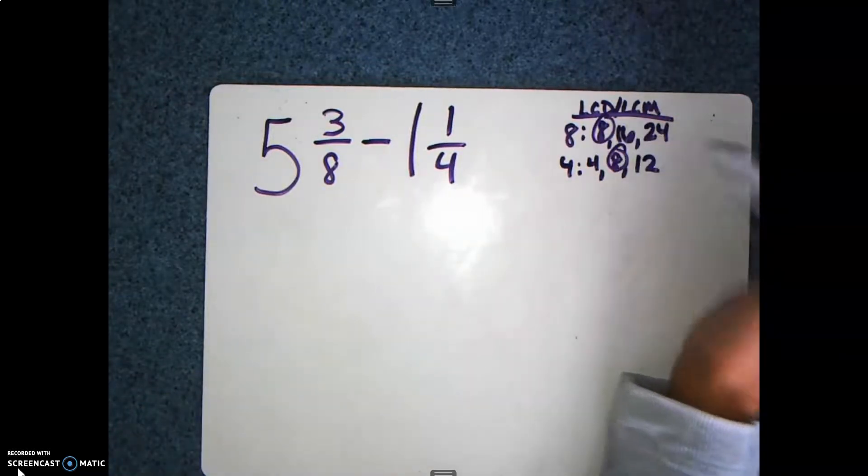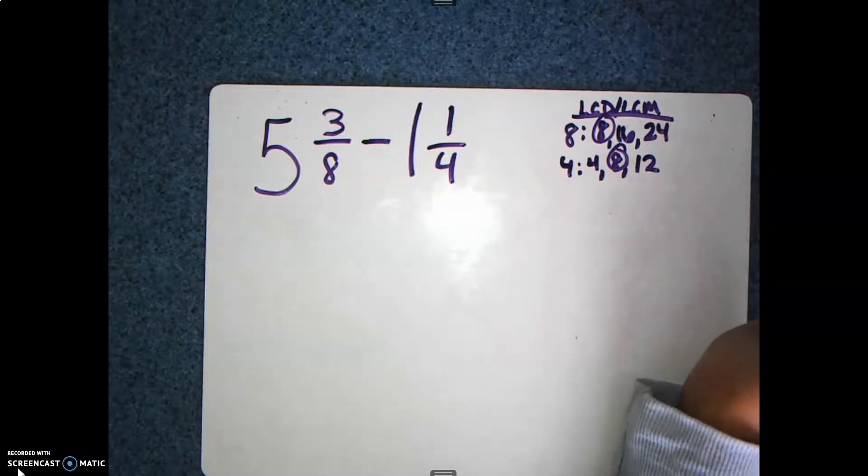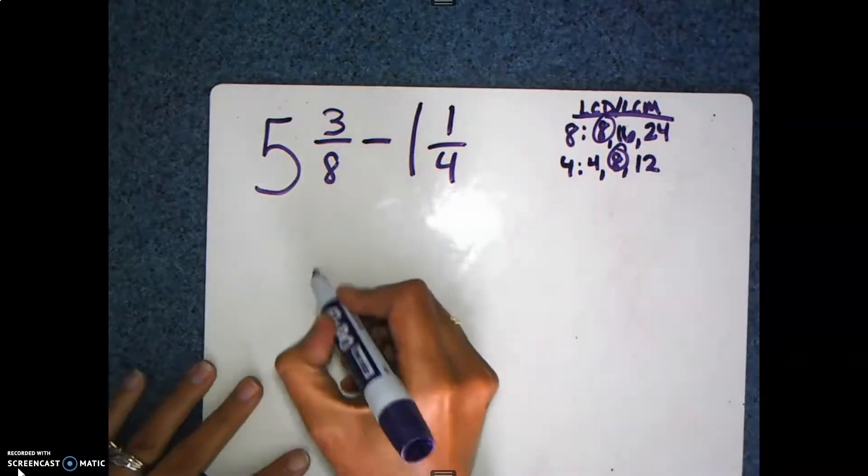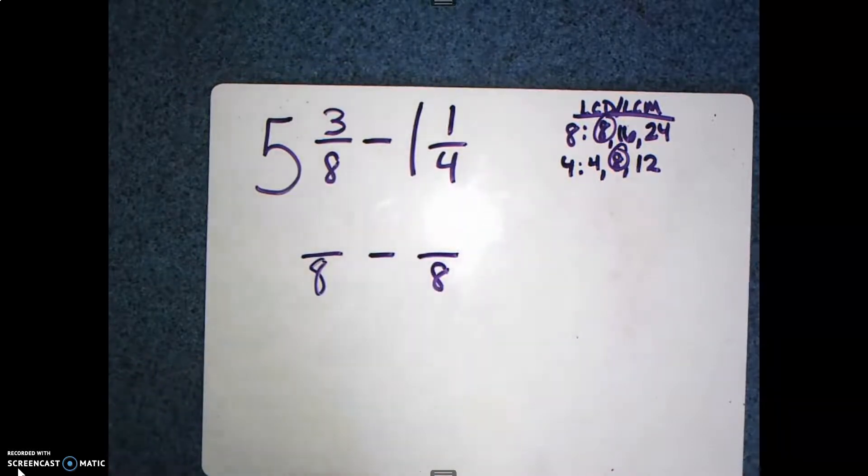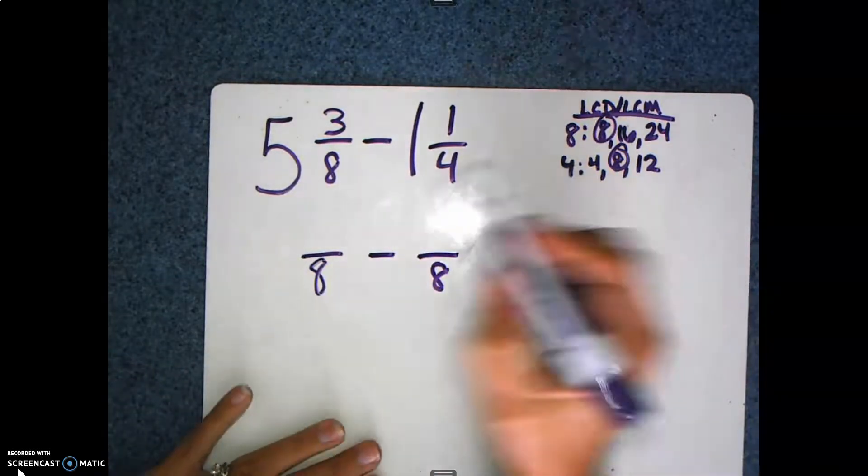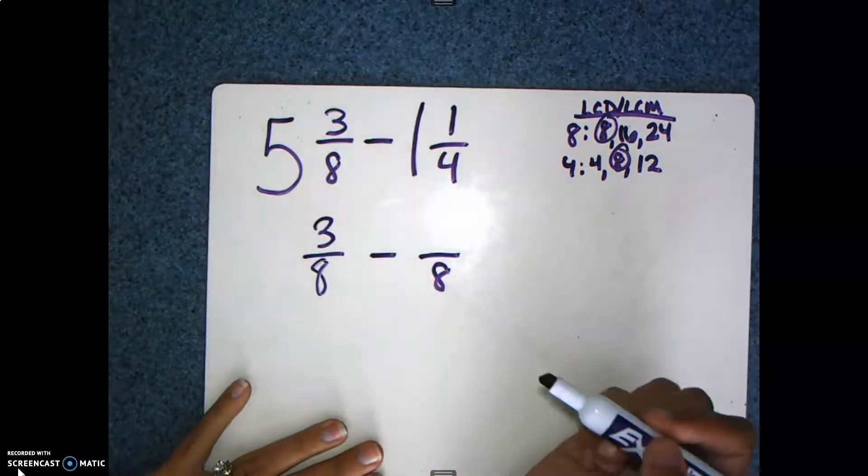Right here, their lowest common denominator and lowest common multiple is going to be 8. So I bring down my 8s here. I'm going to make these into equivalent fractions that have an 8 as a denominator. ⅜ stays as 8.